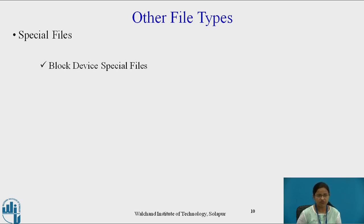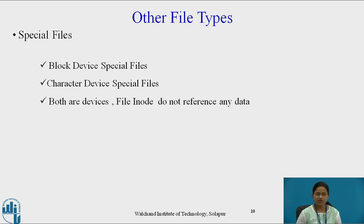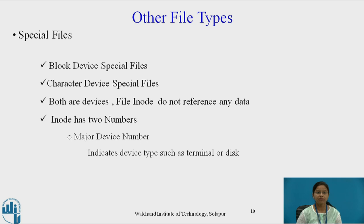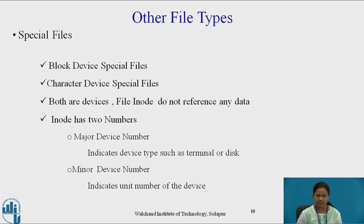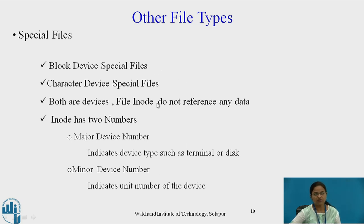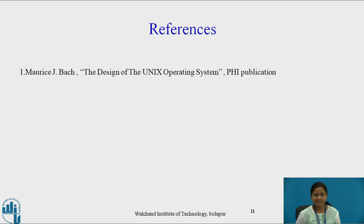Special files are block device special files and character device special files. Both are devices, and the file inode does not reference any data in this case. Since everything is created as a file in the Unix operating system, these devices are also created as files. The inode of these files has two numbers: the major device number and the minor device number. The major device number indicates the device type, such as whether it is a terminal or disk, and the minor device number indicates the unit number of the device. Using major and minor numbers, it is easy to identify which type of device it is. These are the references. Thank you.